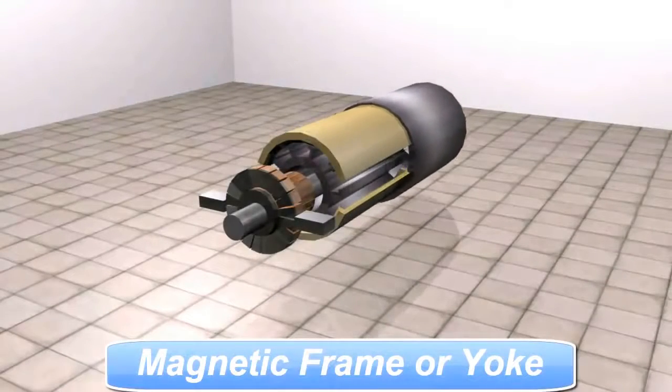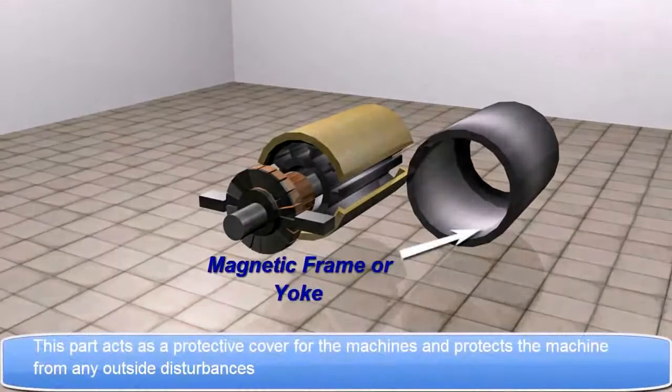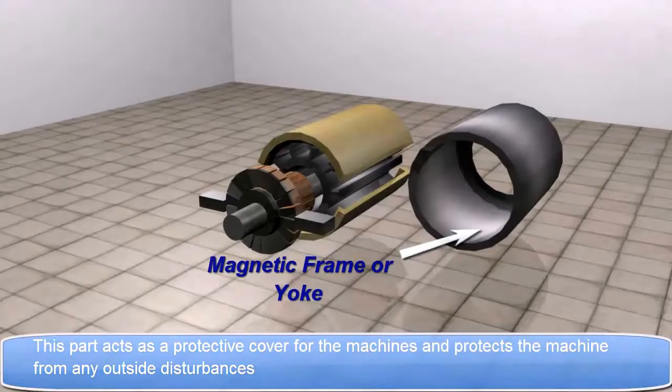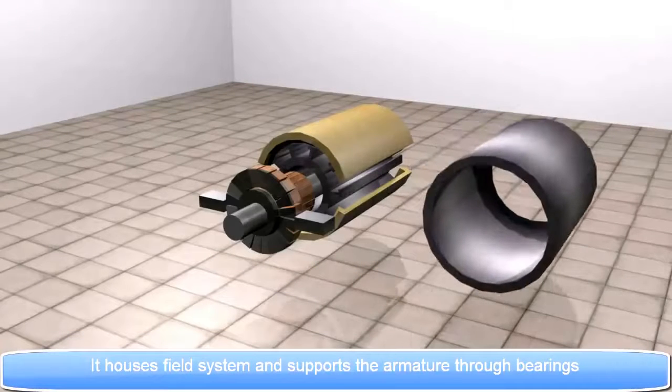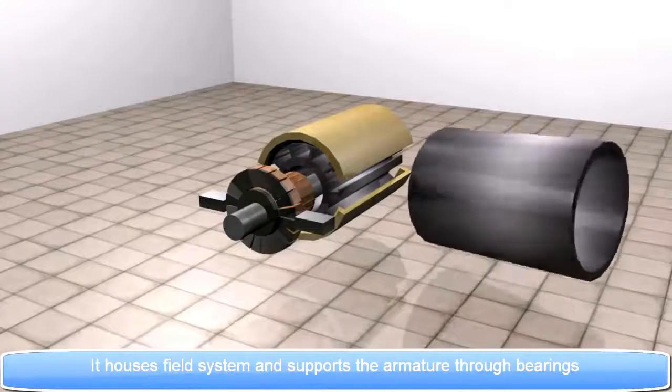Magnetic Frame or Yoke: This part acts as a protective cover for the machines and protects the machine from any outside disturbances. It houses field system and supports the armature through bearings.